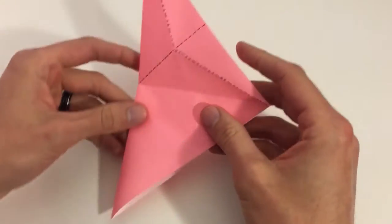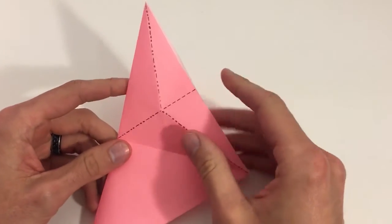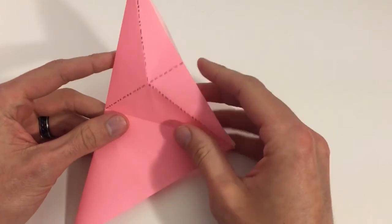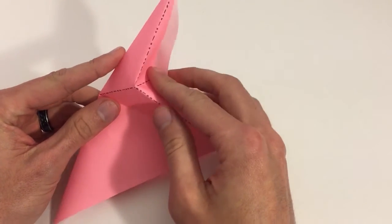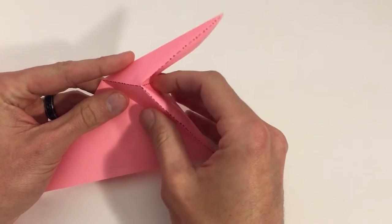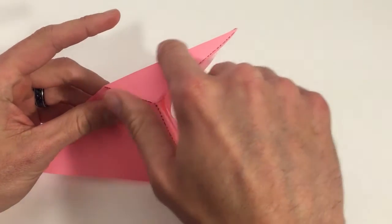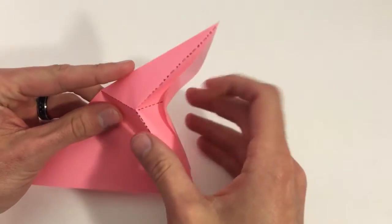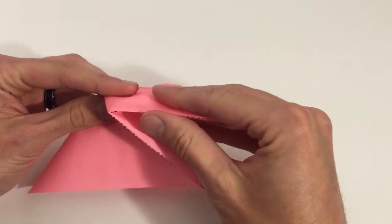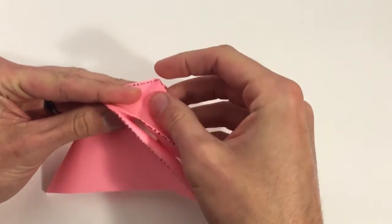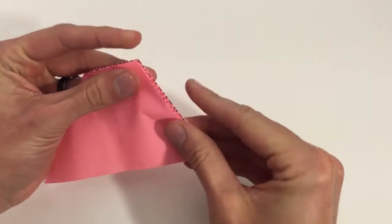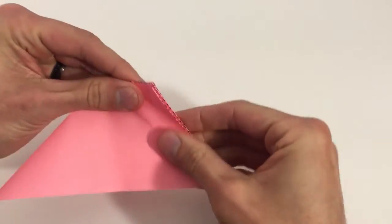Close it back up, and we'll be making all of those folds at once with all of those mountain folds. And this crease up here is going to reverse. So if you push that in, reverse that crease, and close it all up.